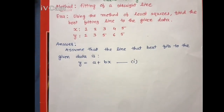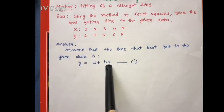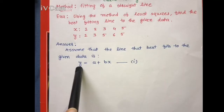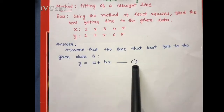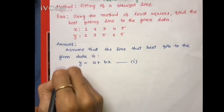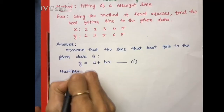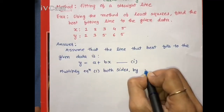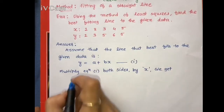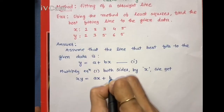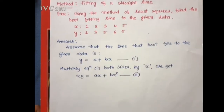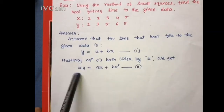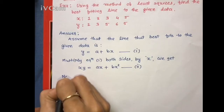To write down the normal equations, we first multiply equation 1 by its independent variable. Here x is the independent variable and y is the dependent variable. Therefore we multiply equation 1 by x on both sides, giving xy = ax + bx². This is equation 2. Now to write down the normal equations, we apply summation to both sides of equations 1 and 2.